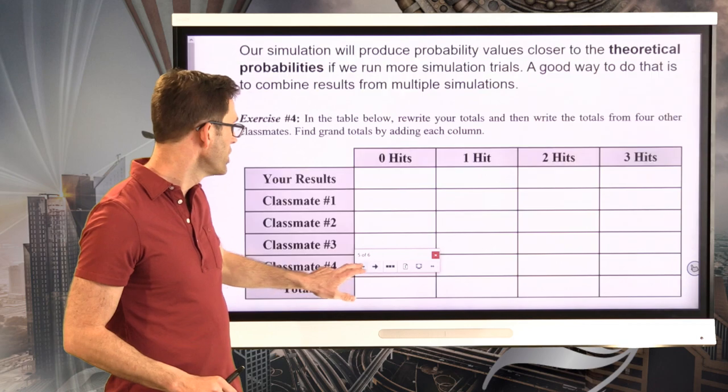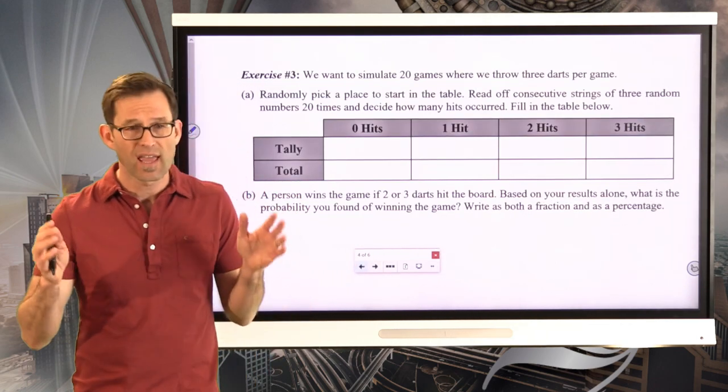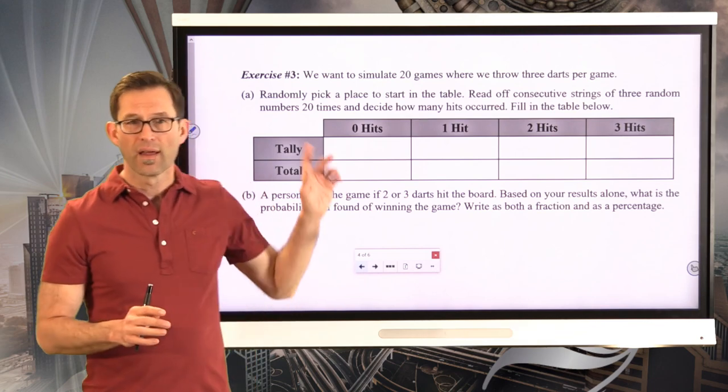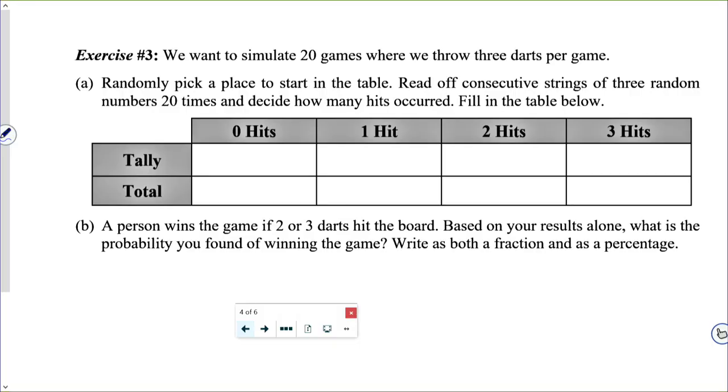Now, what you're going to be doing at this point is you're going to be using that table of those values. And all I want you to do, and let's take a look at it in exercise three - we want to simulate the game 20 times. I want you to play the game 20 times. So, letter A, randomly pick a place to start in the table. I mean, literally, just put your pencil down somewhere in the table and read off consecutive strings of three random numbers 20 times and decide how many hits occur. Fill in the table below.